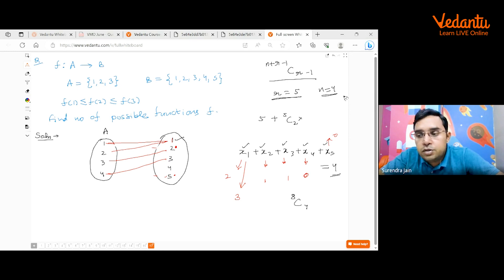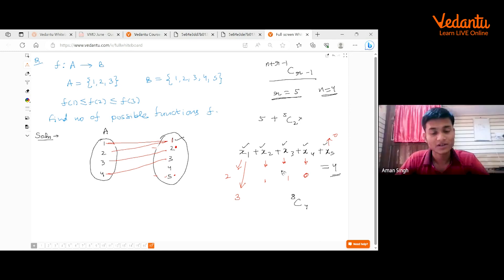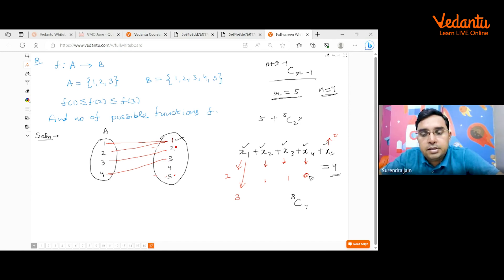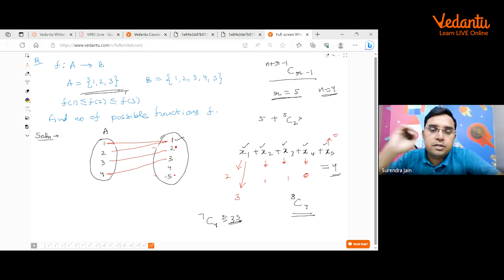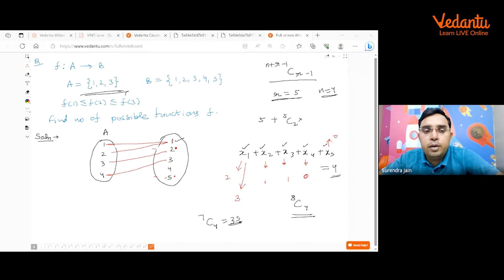Okay, yes, look here. Tumko na yeh sare jo basic formulas hai like beggar, coin, group formation, derangement, inclusion-exclusion, arrangement of alike objects, yeh sare acche se yaad hona chahiye without any doubt, nahi toh dikkat ho jayegi. Okay, answer is ka 8C4 ho ga. Isse pahle walay ka 7C4 ho ta.